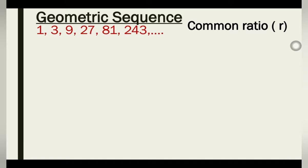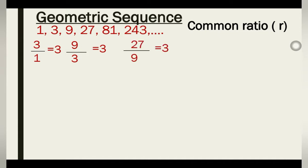Let me make it more clear. When I take 3 and divide by the preceding term 1, I get 3. When I take 9 and divide by the preceding term 3, I get 3. When I take 27 and divide by the preceding term 9, I get 3. The ratio is constant throughout — 3, 3, 3, 3 — and this makes the sequence a geometric sequence because the ratio is constant.